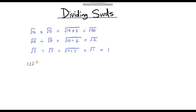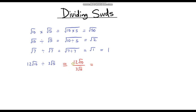Let's do another, slightly trickier one: 12 root 10 divided by 3 root 5. I'm going to rewrite this as a fraction — 12 root 10 in the numerator divided by 3 root 5. First, focus on the integers: 12 divided by 3 is 4. Now focus on the surds: root 10 divided by root 5 is root 2. So our answer is 4 root 2.